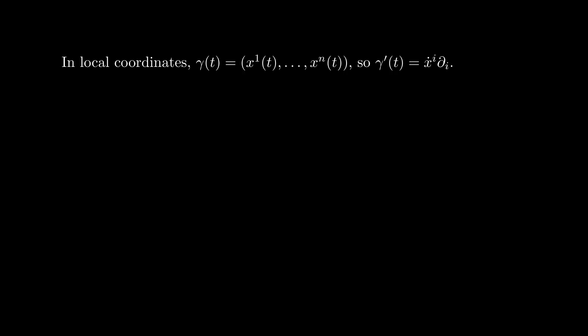Now we will use local coordinates to turn the definition of geodesic into a nice differential equation. Take a curve gamma with coordinates x1, x2, and so on. Its velocity has components x1 dot, x2 dot, and so on.